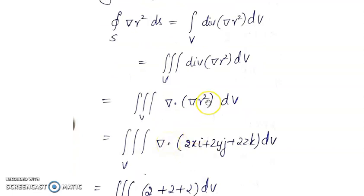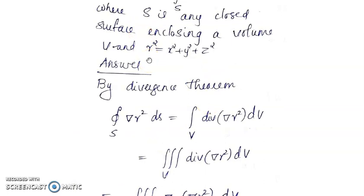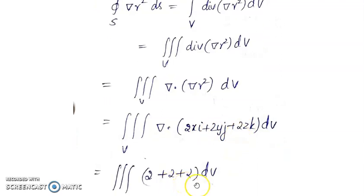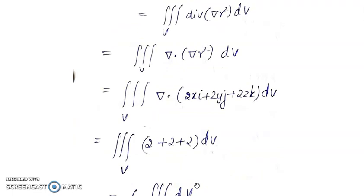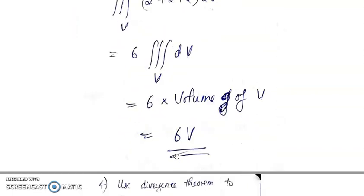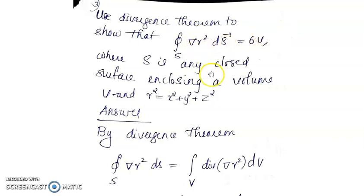So ∇·(∇R²) = 2 + 2 + 2 = 6. Therefore the surface integral equals 6 times the triple integral over V of dV, which represents the volume of the given solid. So we get 6V, which is the required result.